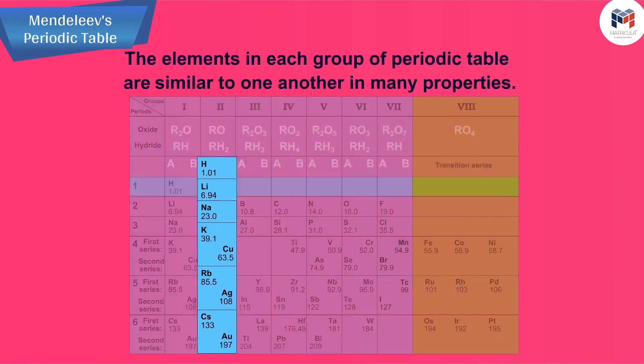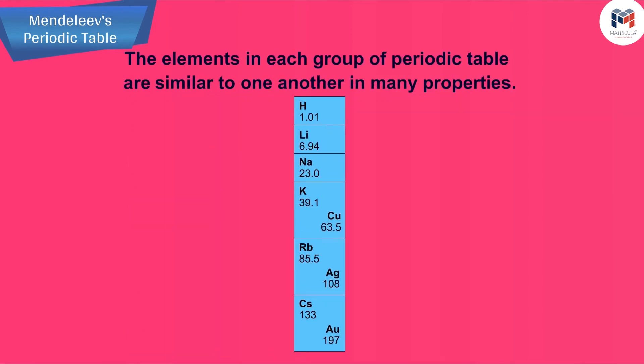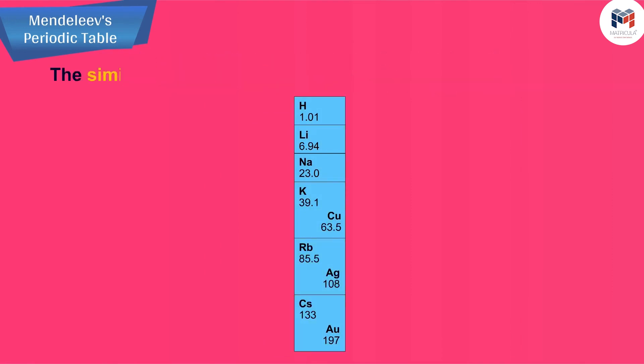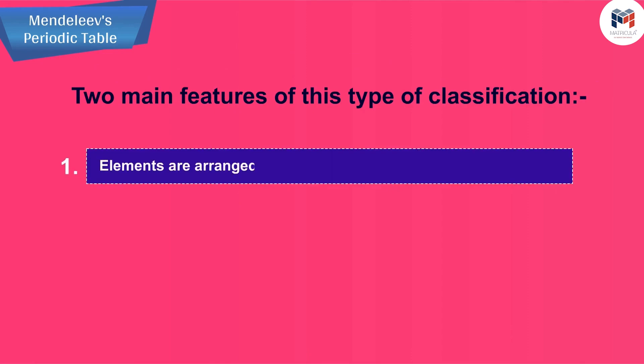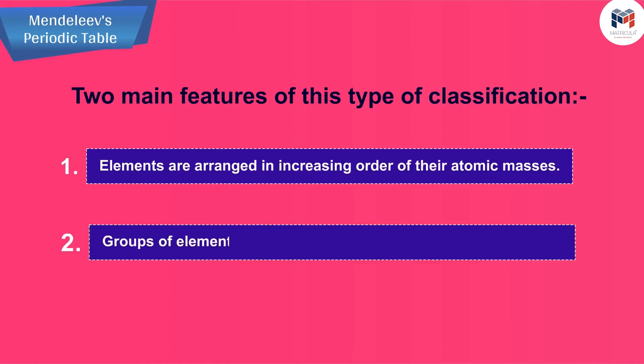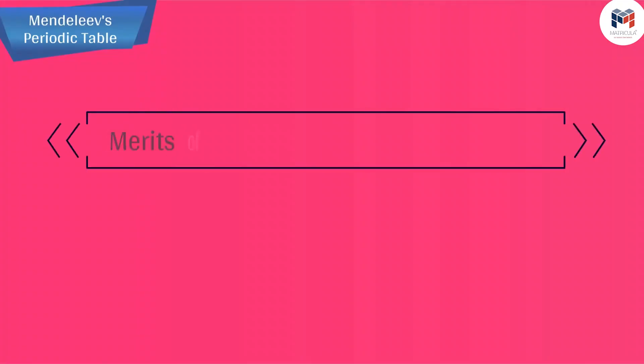The elements in each group of periodic table are similar to one another in many properties. The similar properties of the elements are repeated periodically. We will now describe two main features of this type of classification: one, elements are arranged in increasing order of their atomic masses; two, groups of elements have similar properties.